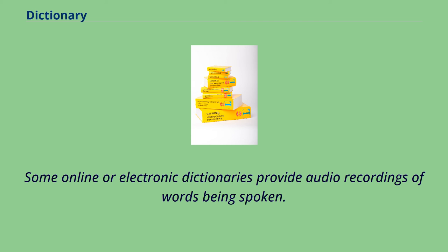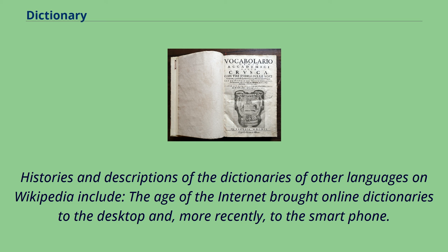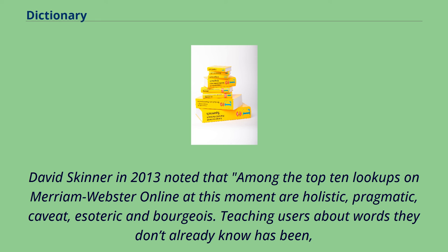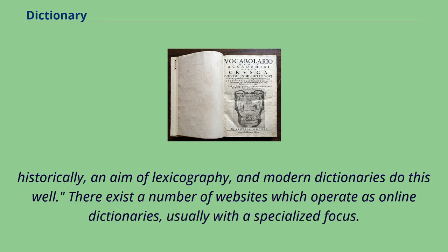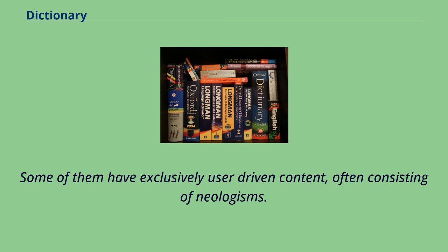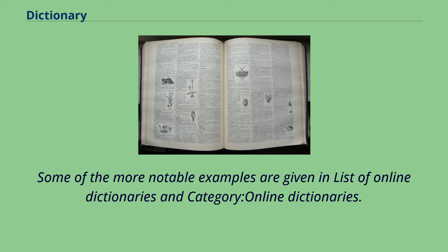The age of the internet brought online dictionaries to the desktop and, more recently, to the smartphone. David Skinner in 2013 noted that among the top 10 lookups on Merriam-Webster Online at that moment are holistic, pragmatic, caveat, esoteric, and bourgeois. Teaching users about words they don't already know has historically been an aim of lexicography, and modern dictionaries do this well. There exist a number of websites which operate as online dictionaries, usually with a specialized focus; some have exclusively user-driven content, often consisting of neologisms. Some of the more notable examples are given in the list of online dictionaries.